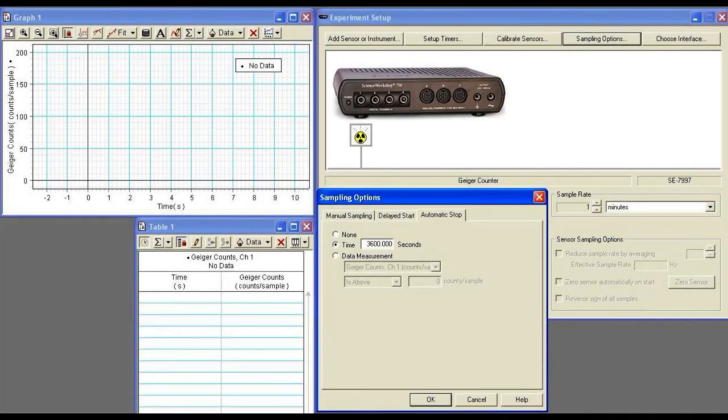In Data Studio, set the sample rate to 1 minute and the stop time to 3600 seconds, or 1 hour. The Geiger counter is set to record counts for 1 minute intervals and store and plot the results for 1 hour.